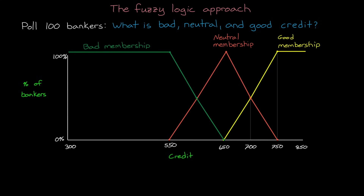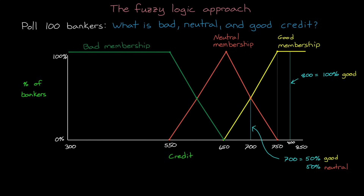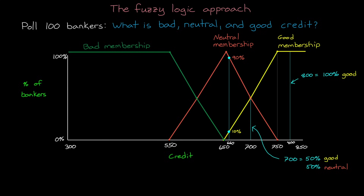We end up with these three overlapping membership functions. Now we can see that the truth of a statement doesn't have to belong to only a single set, true or false. They can belong to multiple sets based on the degree of truth. A score of 800 belongs 100% in the good credit set, but a score of 700 belongs 50% to good and 50% to neutral — it is equally true that a score of 700 is both good and neutral. So what would a credit score of 660 be? Intuitively we think it's mostly neutral. And according to our membership functions, 660 is 90% neutral and 10% good. Therefore an input value of 660 becomes the fuzzy number 0.9, 0.1. This process of going from that crisp input value to a fuzzy value is called fuzzification.